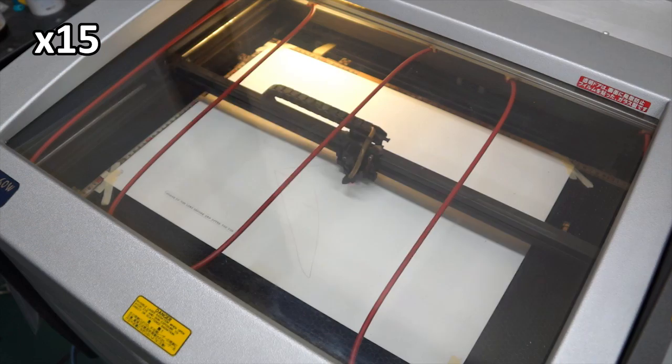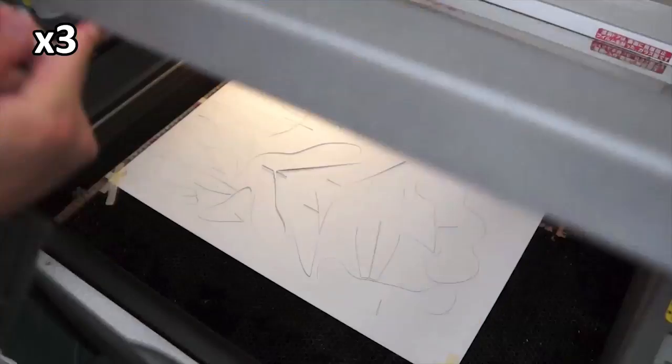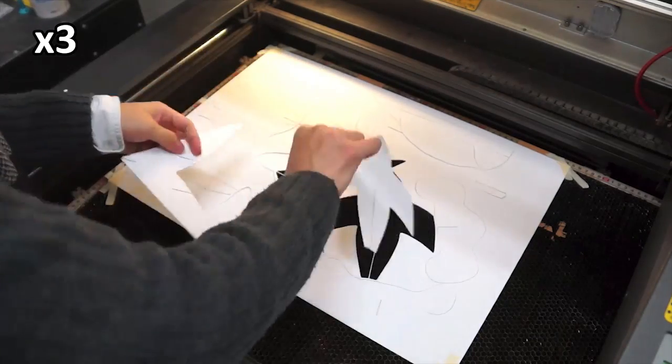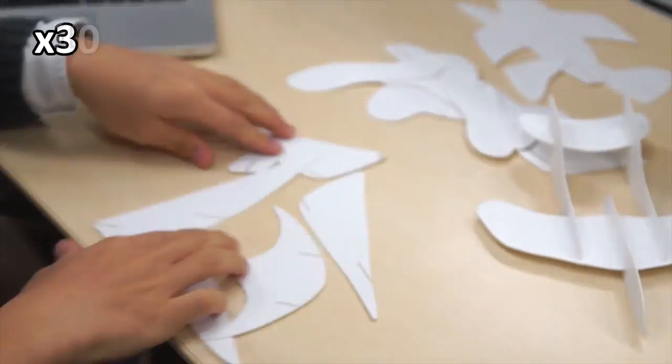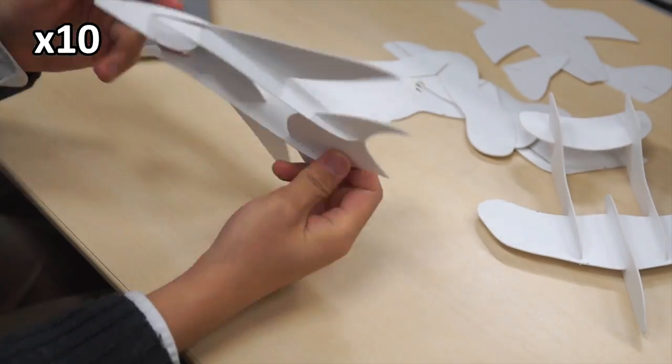Our design tool generates fabrication plans, and we laser-cut our planes from 1mm-thick foam core board. Interlocking slits make plane assembly straightforward, and we add small plastic braces to enforce rigidity.